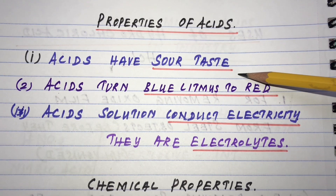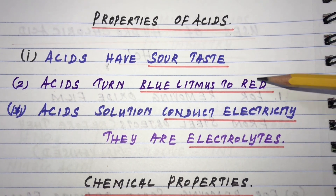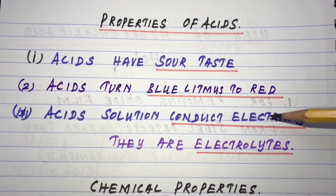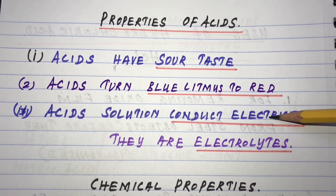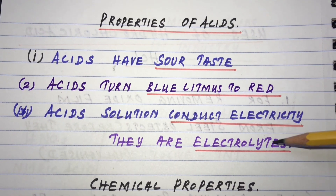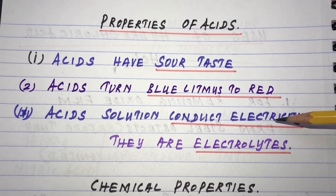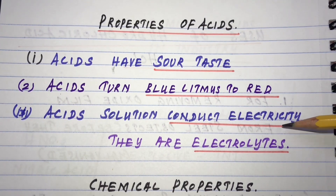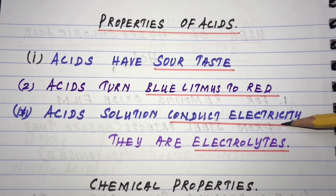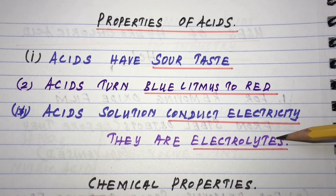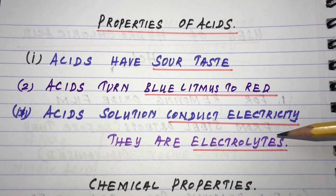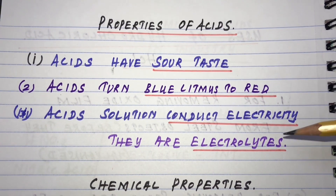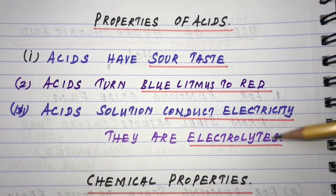Acids have a sour taste. They turn blue litmus to red. Acid solutions conduct electricity — they are electrolytes. As they dissolve in water, they dissociate into ions. The movement of ions to oppositely charged rods is responsible for electric current.